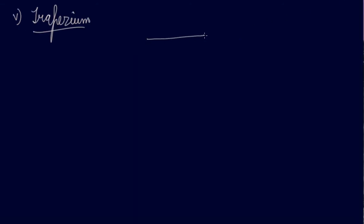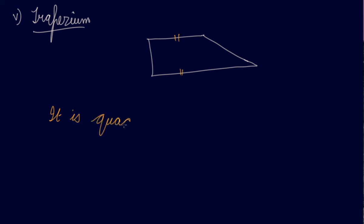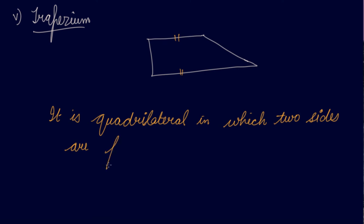Now, trapezium. I have made a figure in which two sides are parallel to each other. A trapezium is a quadrilateral in which exactly one pair of opposite sides is parallel to each other. So this figure is known as a trapezium.